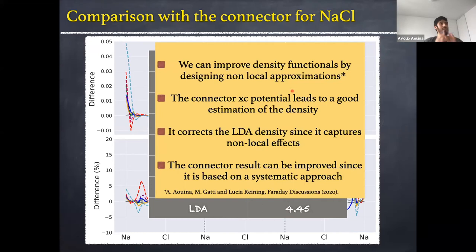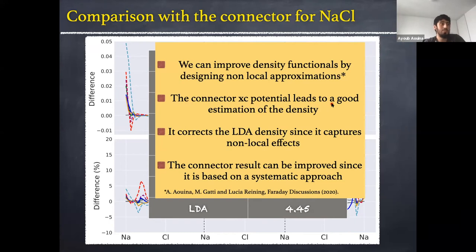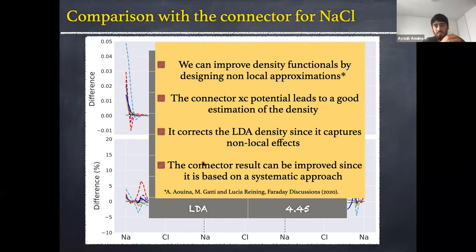In conclusion, using the connector theory, we can improve density functionals by designing non-local approximations. The connector VXC leads to a good estimation of the density — very accurate for silicon and a good estimation for NaCl. It corrects the LDA because it captures non-local effects. Another important point is that the connector results can always be improved, since it is based on a systematic approach: if we change the model to one closer to the real system, or improve the quality of the approximation, the connector results automatically improve.